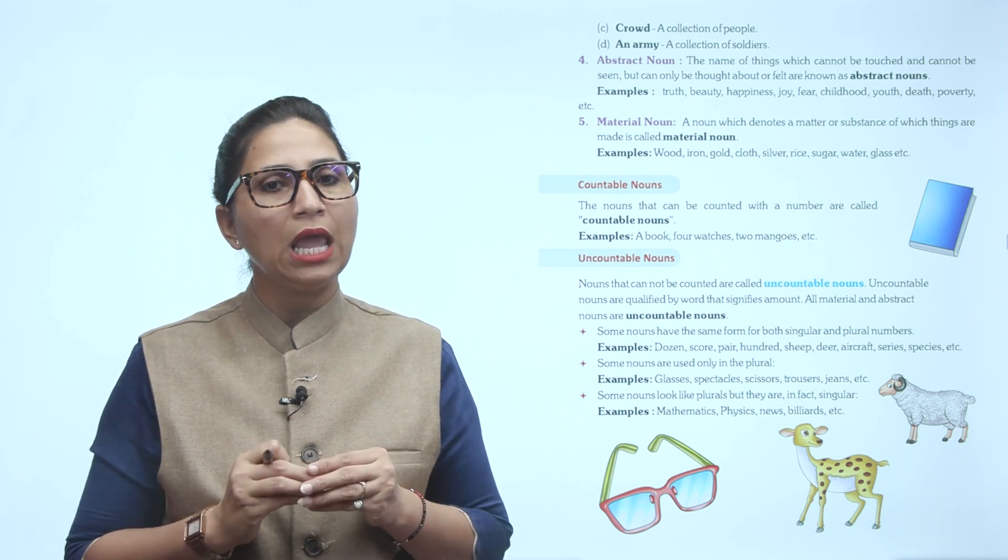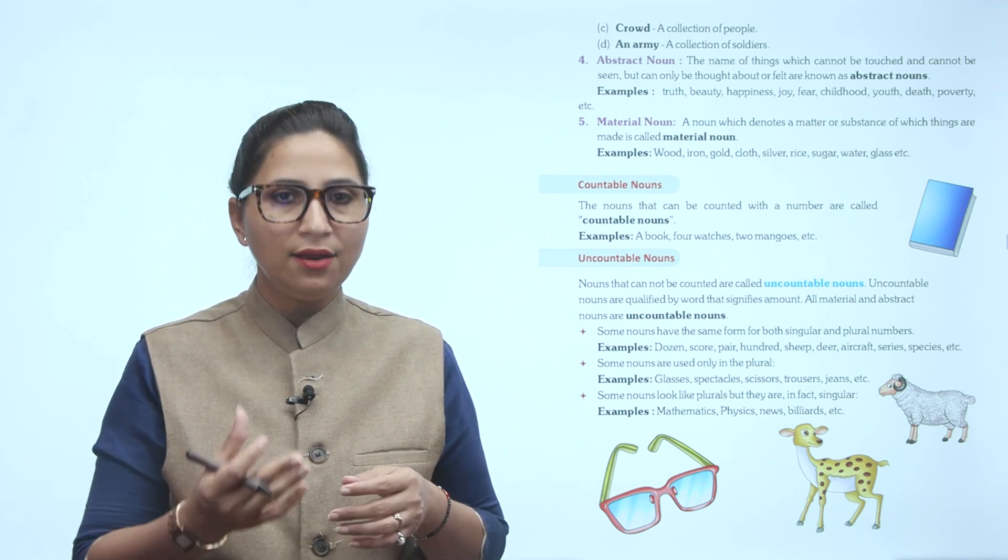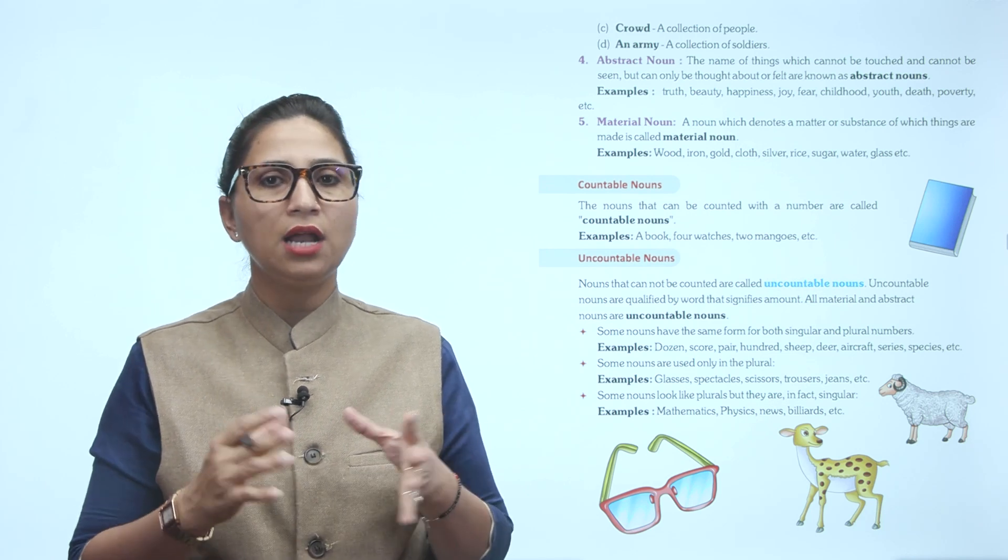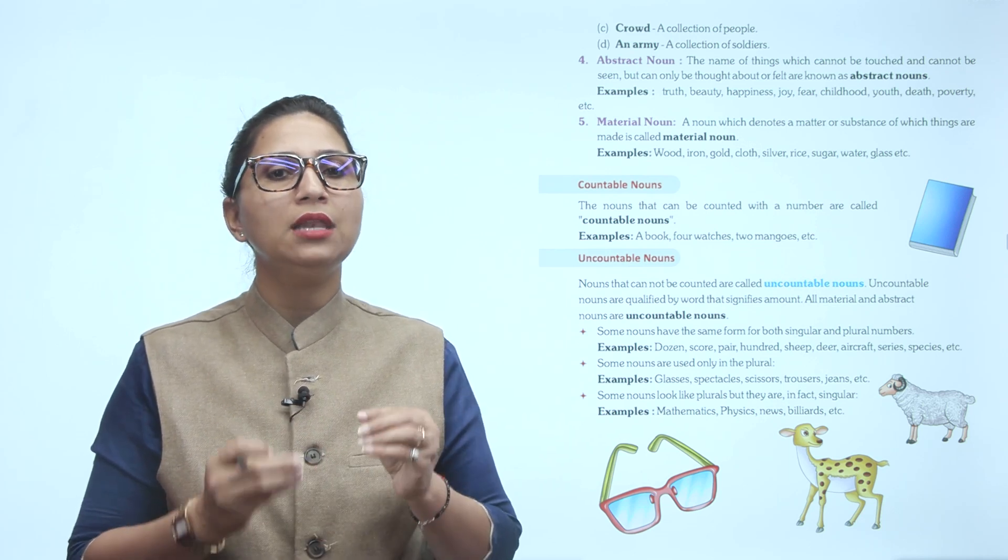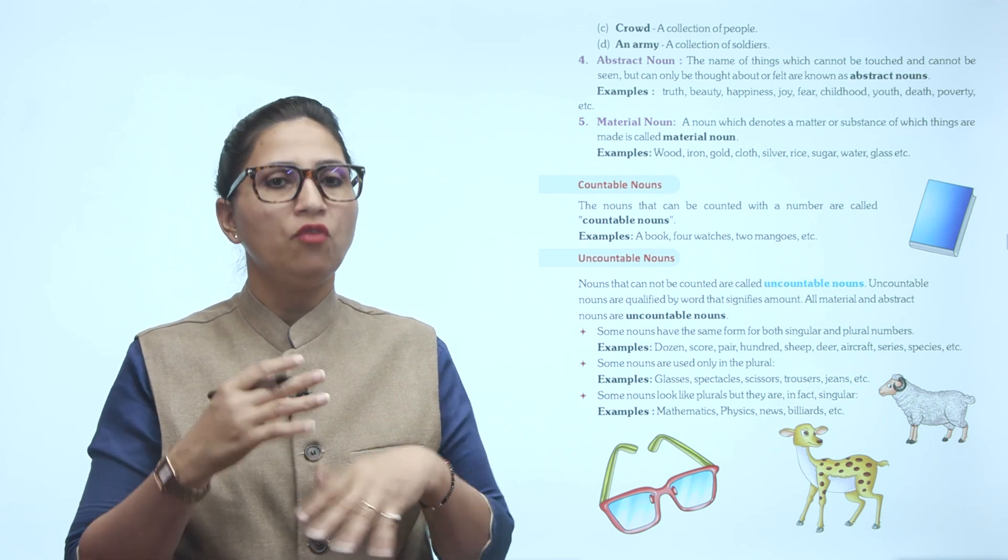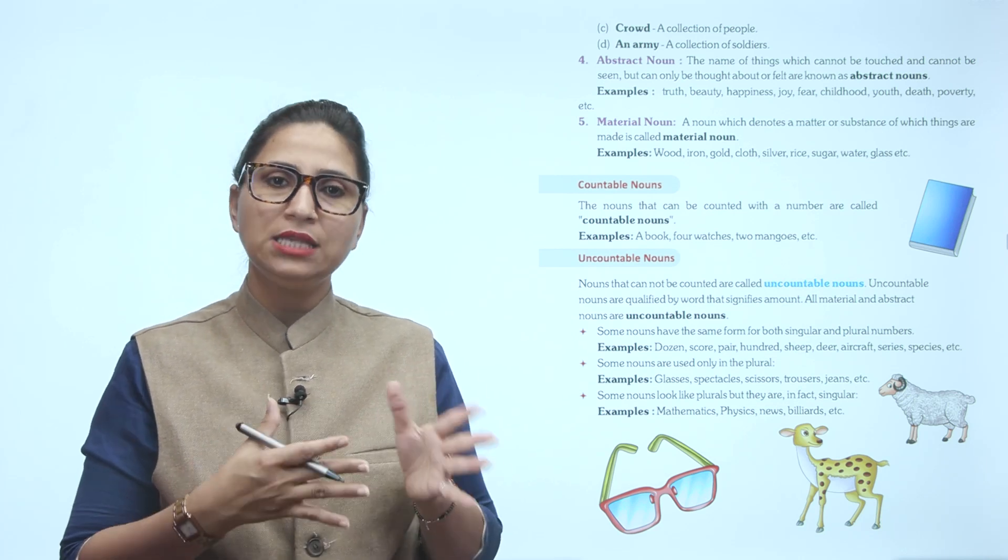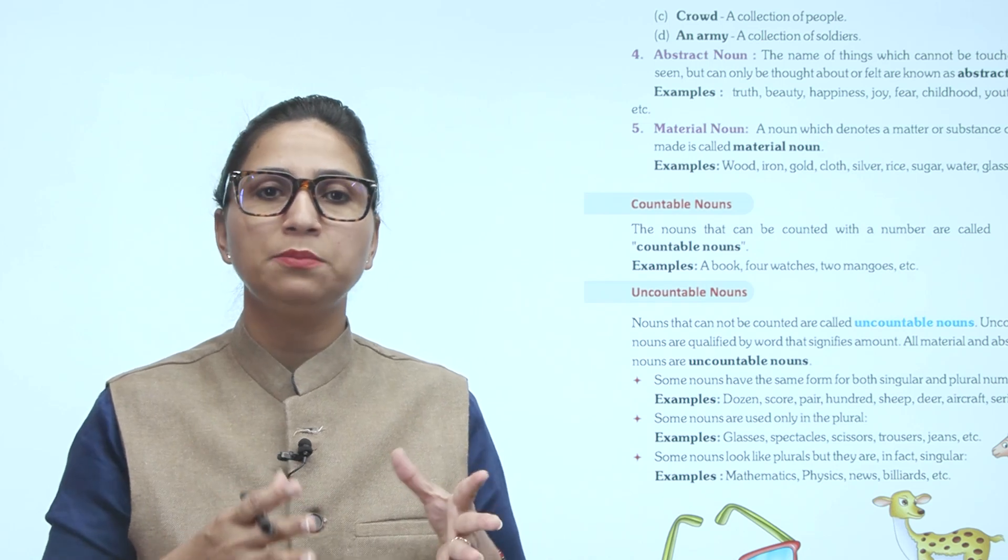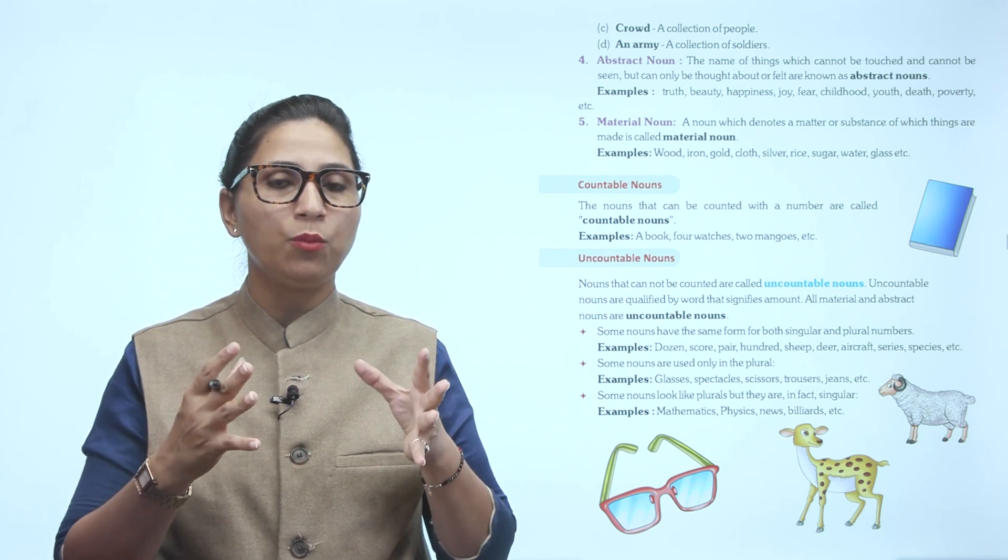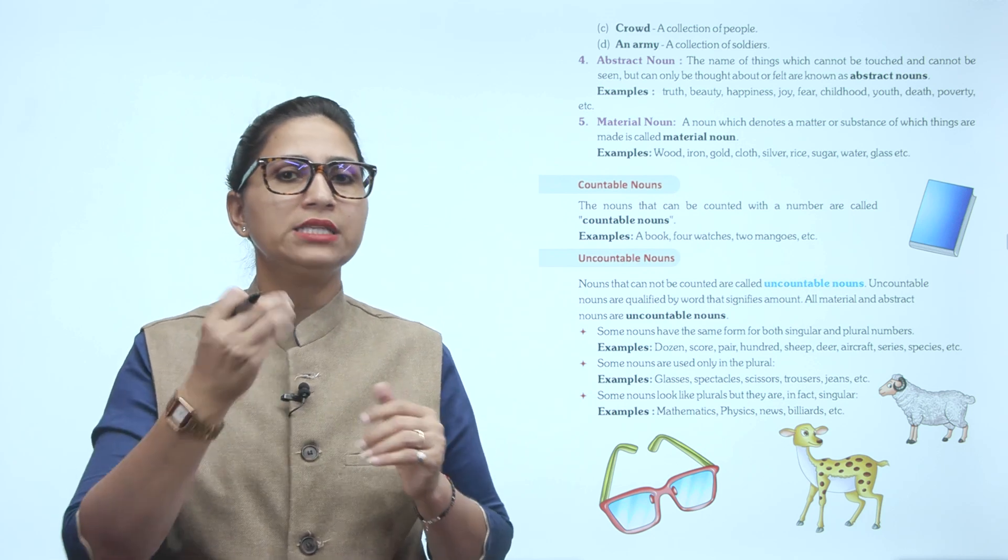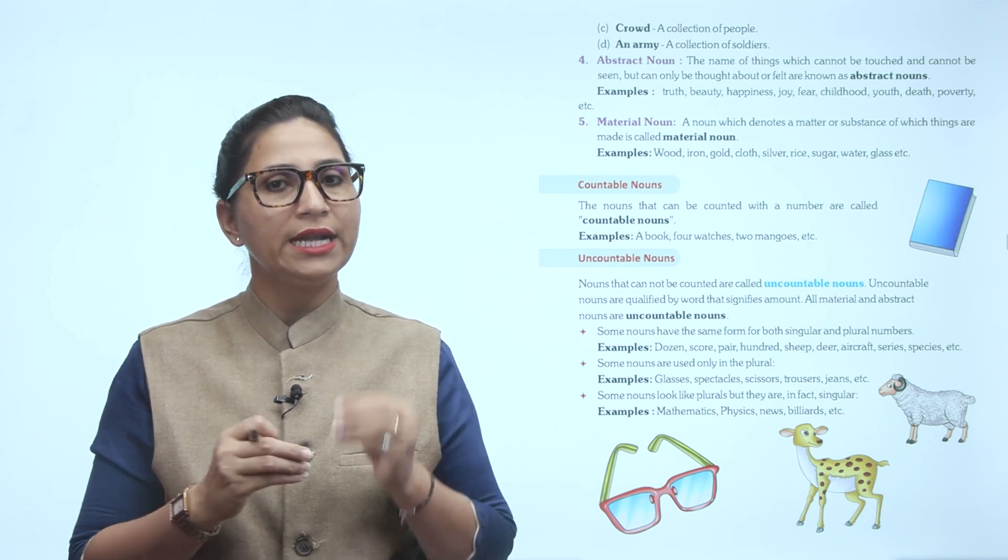Some nouns have the same form for both singular and plural, for example: dozen, score, pair, hundred, sheep, deer, aircraft, series, species. Some nouns are used only in the plural, like glasses, spectacles, scissors, trousers, jeans. Some nouns look like plurals but are actually singular, such as mathematics, physics, news, billiards, arts.